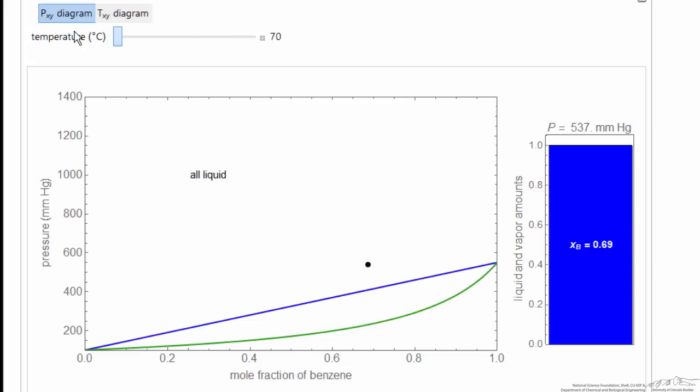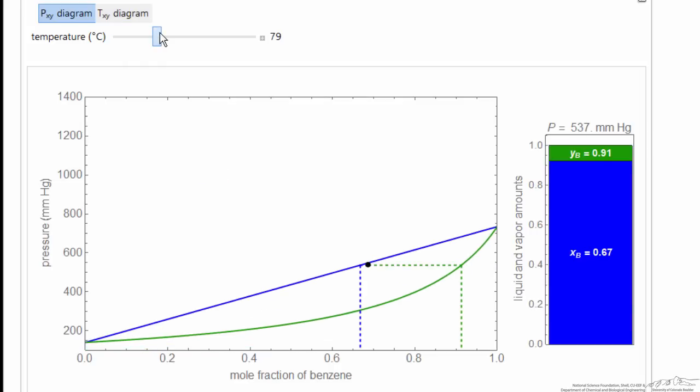And then as I lower the temperature to 70 degrees C, it looks like it's about 500 millimeters of mercury. And so how these move - of course, we're just looking at how the saturation pressures change. And then this blue line is the pressure versus mole fraction of liquid phase, and that's linear where the endpoints are the saturation pressures.